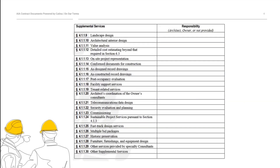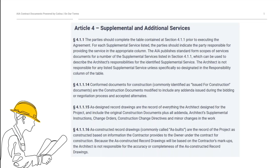Here is the rest of the table. While we do not have a definition for all 30 of these items, we do have some definitions in the instructions and in separate scope documents. This is from the instructions for B-101. As you can see, this defines three of the terms in the table: conformed documents for construction, as designed record drawings, and as constructed record drawings. This section from the instructions goes over those three particular terms in sections 4.1.1.14, 4.1.1.15, and 4.1.1.16.